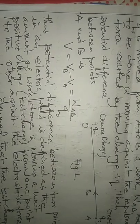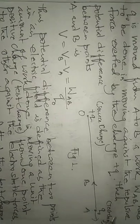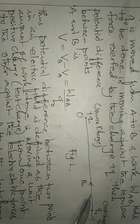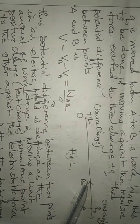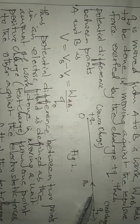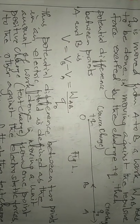When you define potential difference between two points, one point in an electric field is considered as lower potential and another point is considered as higher potential. If you look at this diagram, point A is where the test charge was already located and point B is where the test charge has been moved. So A and B are the two points, and we took the test charge from A to B, doing work against the electrostatic repulsive force.